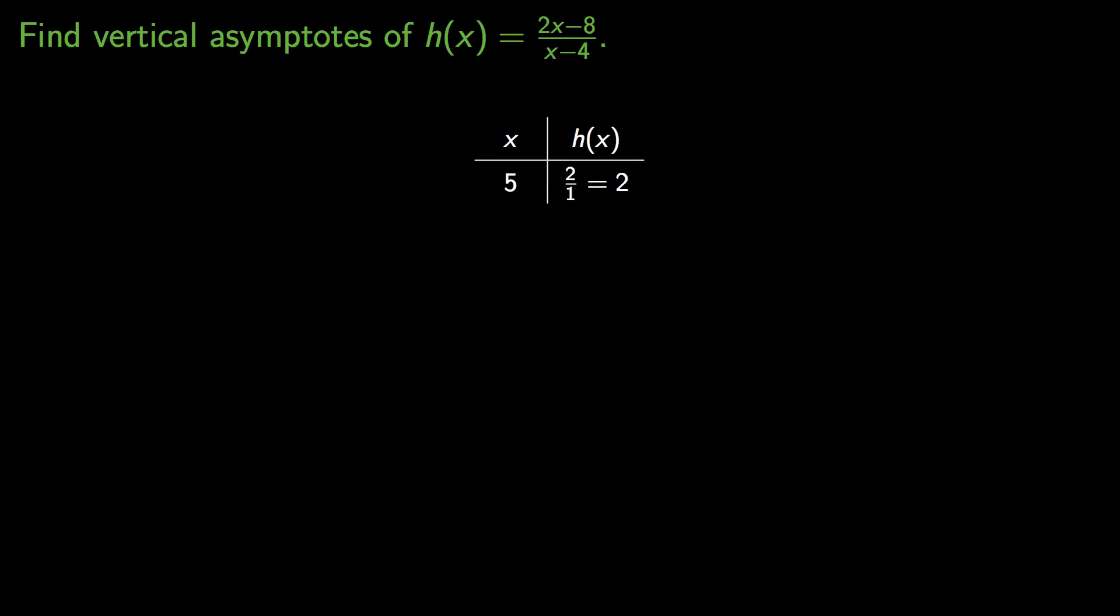I want to compute the vertical asymptotes of h of x equals 2x minus 8 over x minus 4. I suspect that there might be a vertical asymptote at x equals 4. I'm going to check this with a table of values.